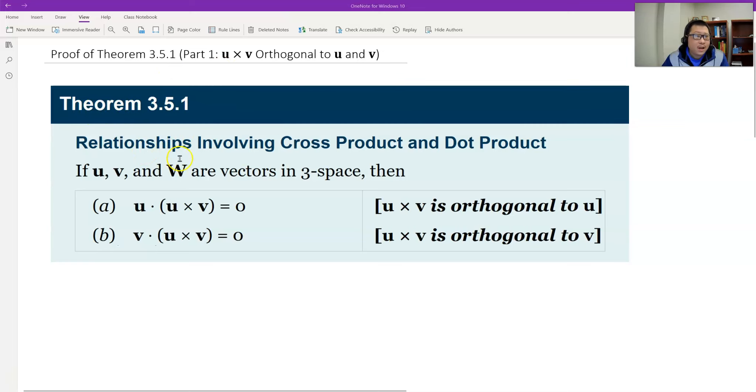This theorem asks the relationship involving cross product and dot product, which is an important theorem. The first part gives us the result, which is the cross product that we define as a vector. The vector is perpendicular or orthogonal to both vectors u and v.